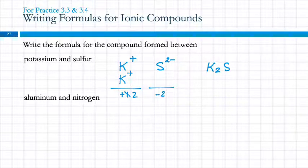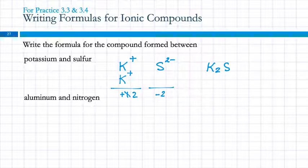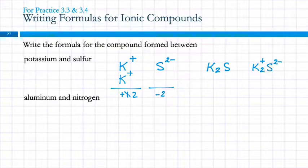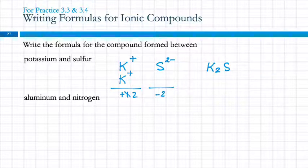We leave out the charges when we write the formula for a compound. The reason is that it would be very messy — we'd have stacked superscripts, subscripts, and signs all over the place. If we want to know the charges, we look at the periodic table. We only write what is necessary.